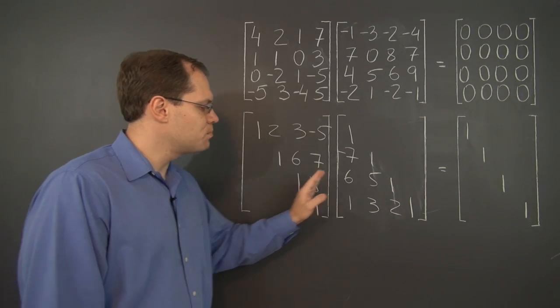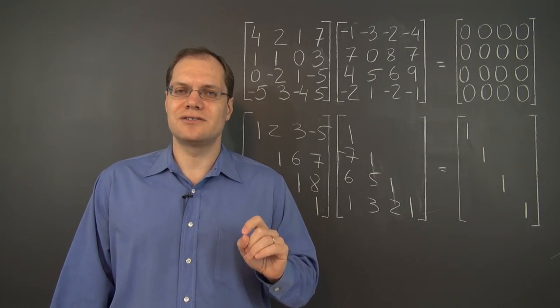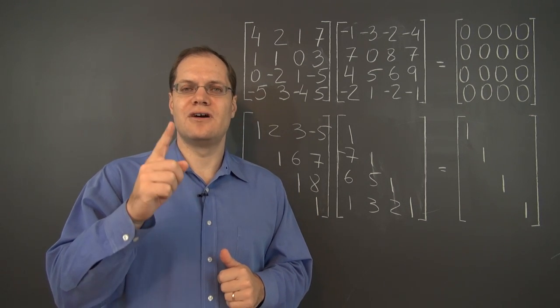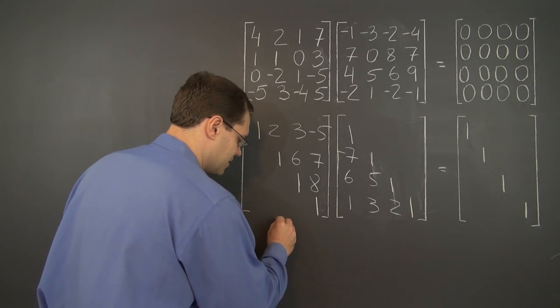This matrix also has nothing but integers in its inverse. And so the product of these matrices will have nothing but integers in its inverse. Why is that? That has to do with the inversion of the product formula, the inverse of a product.